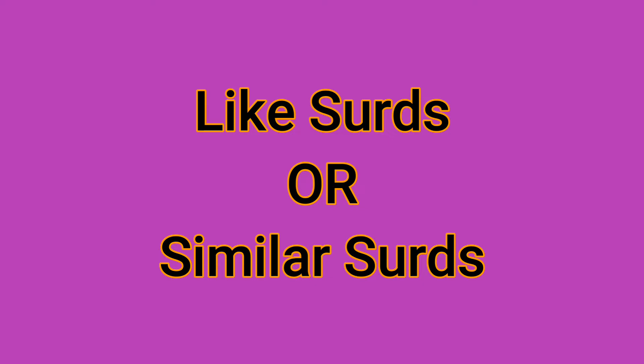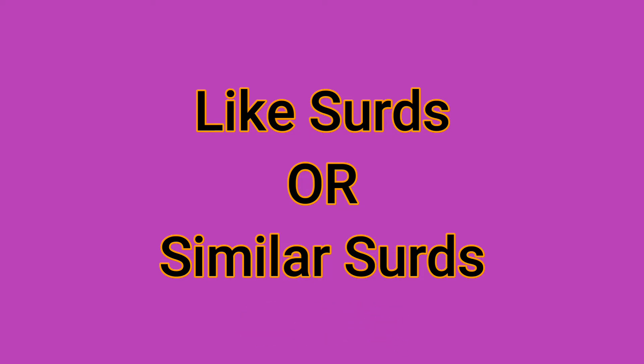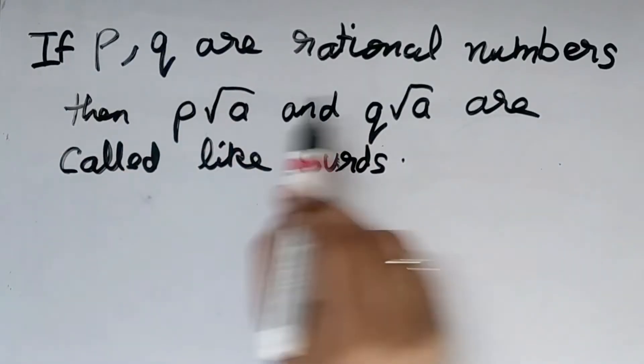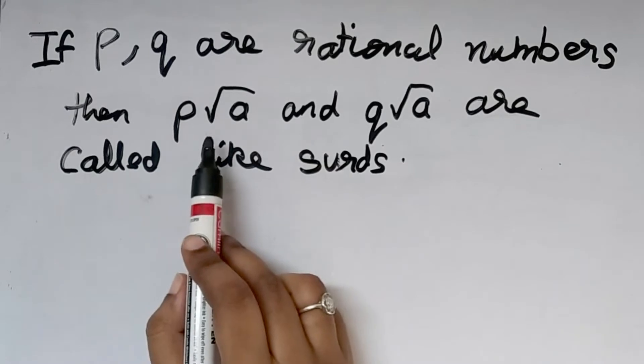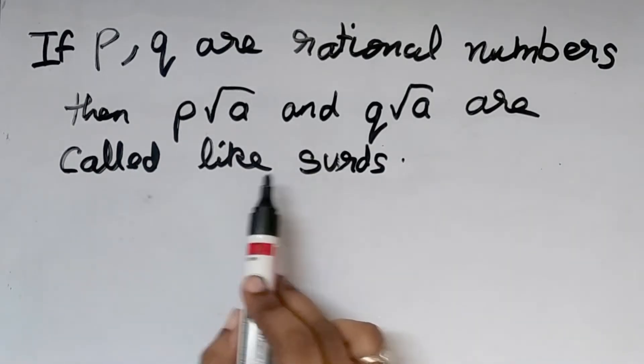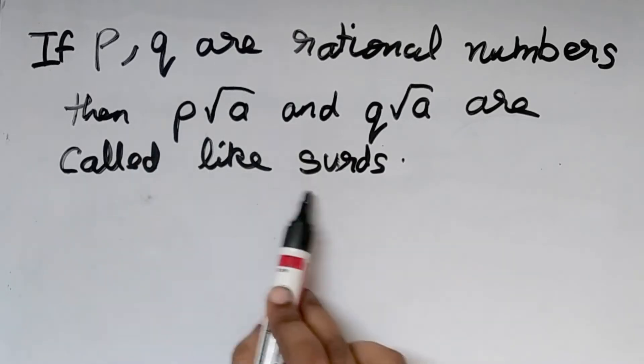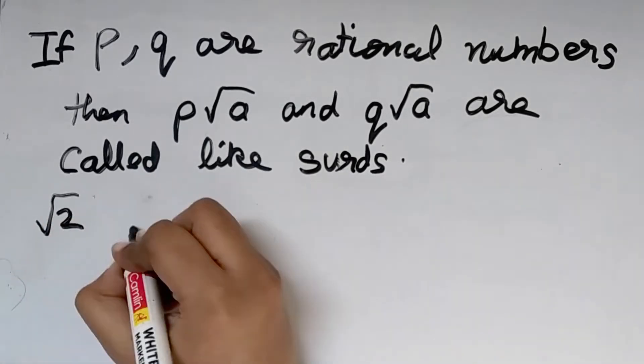Hello everyone. In this video we will learn more about surds. We have already seen what surds are and how to simplify surds in the previous videos. In this video we will see what are similar surds or like surds with four different examples. If p and q are rational numbers, then p into root a and q into root a are called like surds or similar surds.